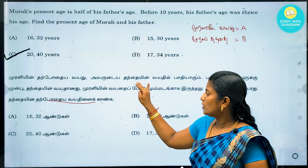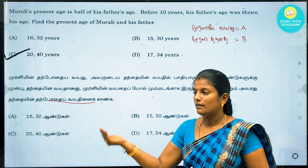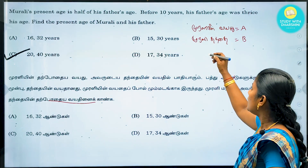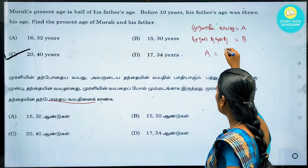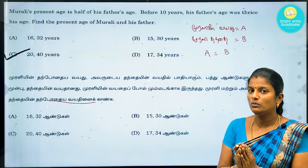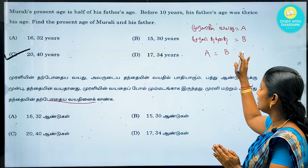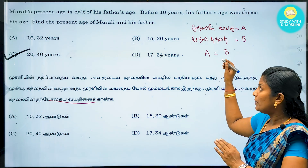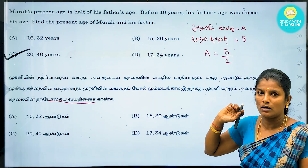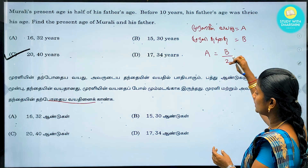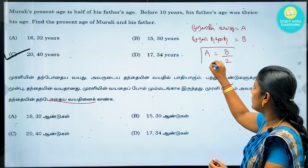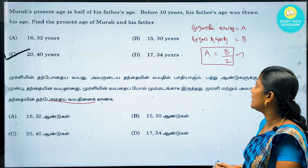The age of a father is 40 and the age of a child is 30. If you see, we call them a and b. Now, why do we divide by two? The age of a is half of b. If you divide the same way, a equals b by 2.